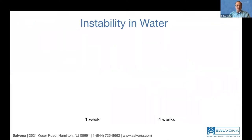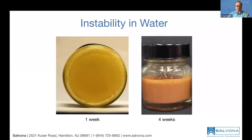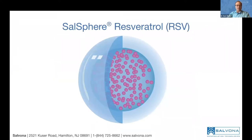If you still want to try using raw resveratrol, you can put it in water as a suspension. Even if you don't see particles on the bottom, you will definitely see discoloration after about a week, and as you wait longer it becomes darker and darker. This occurs at concentrations between one to five percent. If you put in nothing, you get nothing.